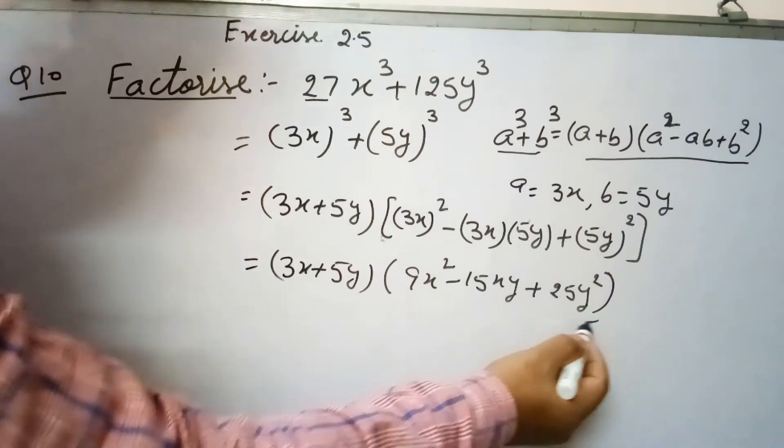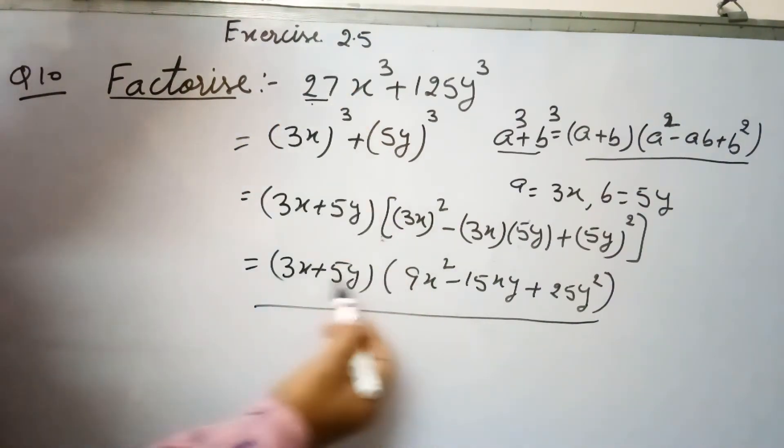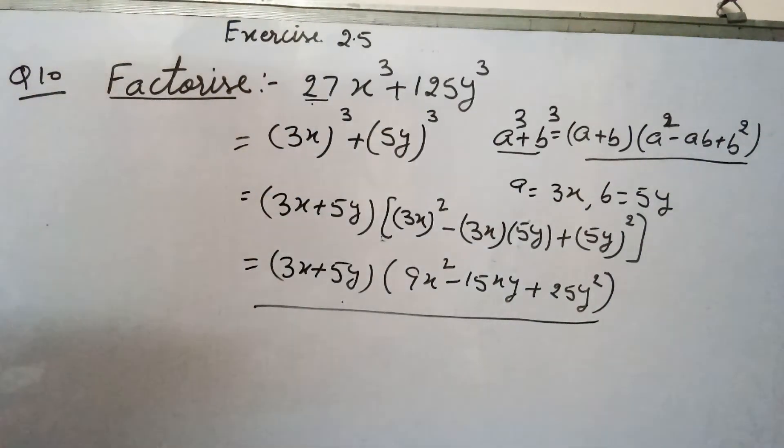So this is factorization form of this. These are the two factors because these both are multiplied with each other. These are the factors of 27x³ + 125y³.